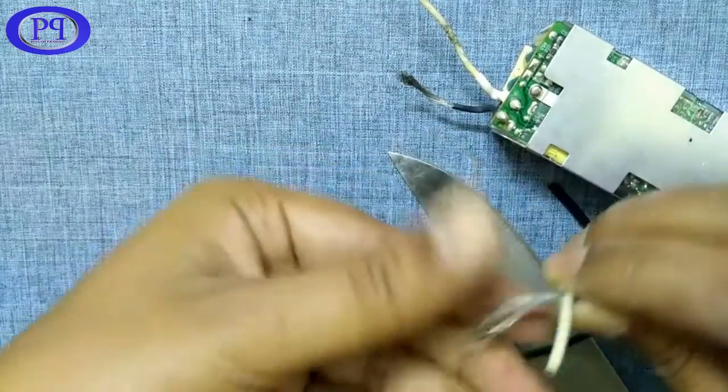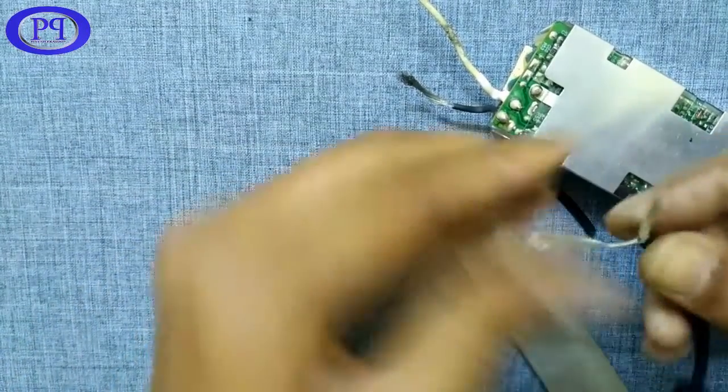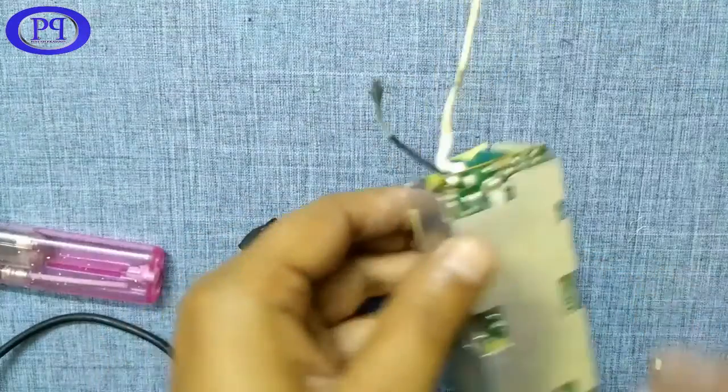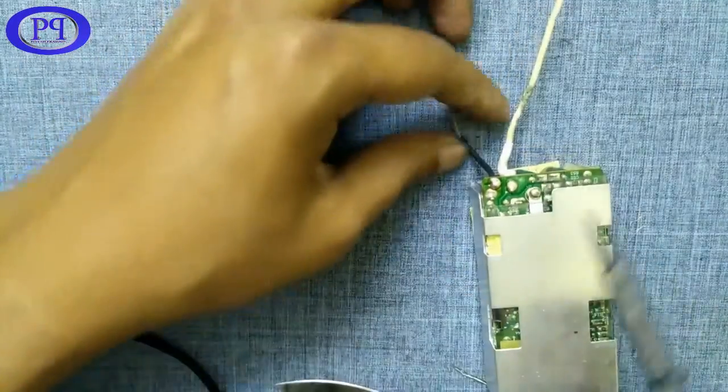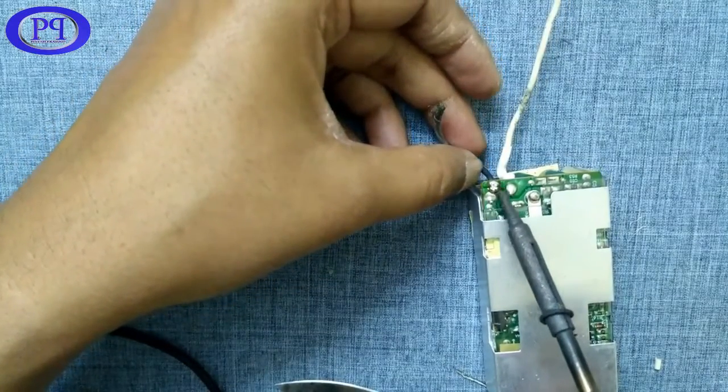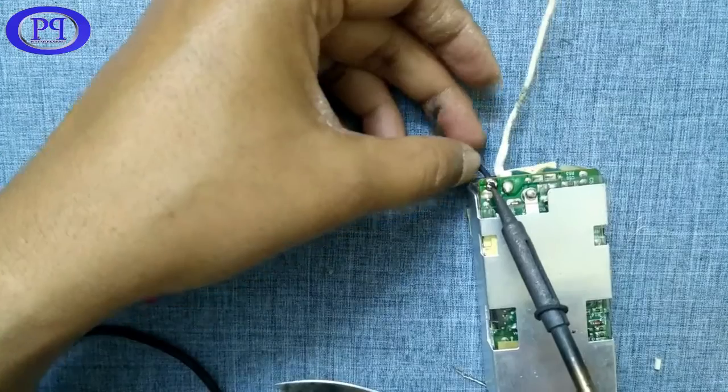So I will just twist it up. Now I will desolder this old part of the wire from the PCB.